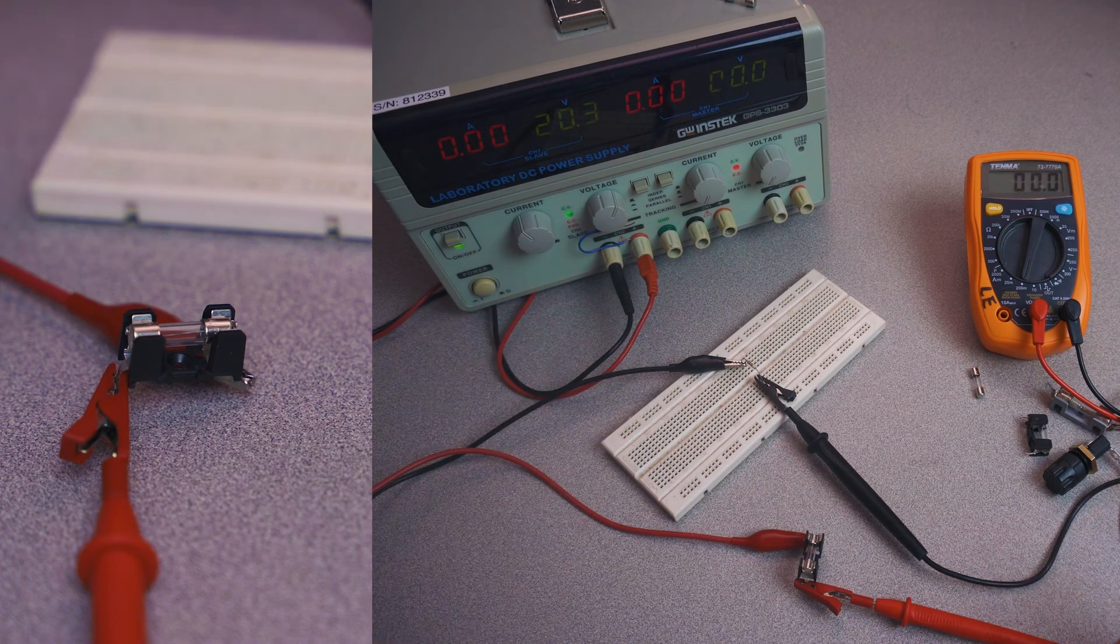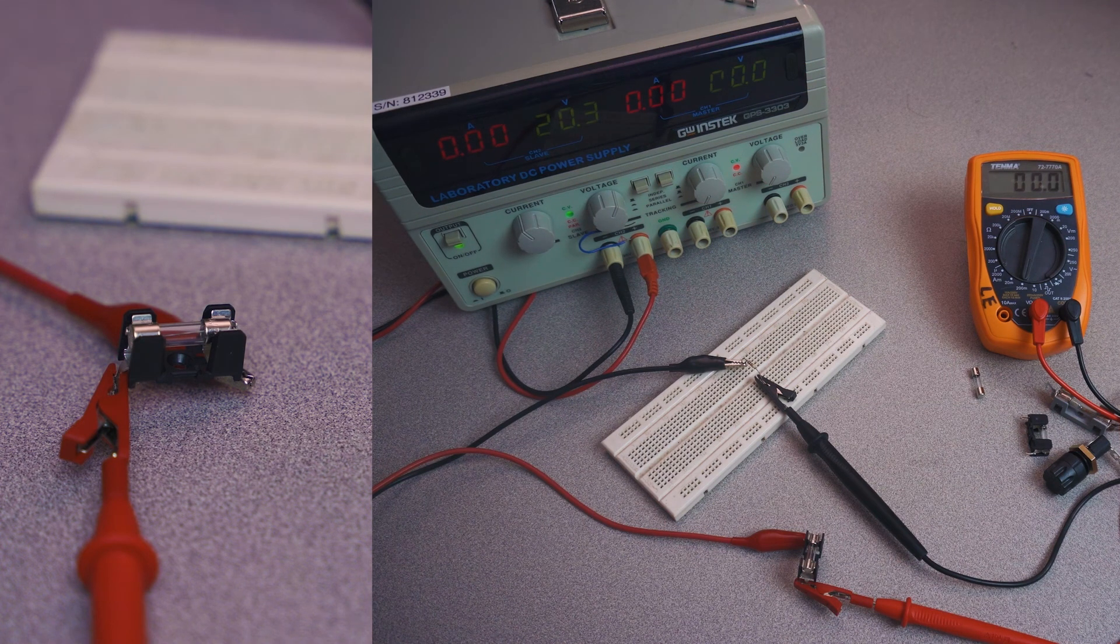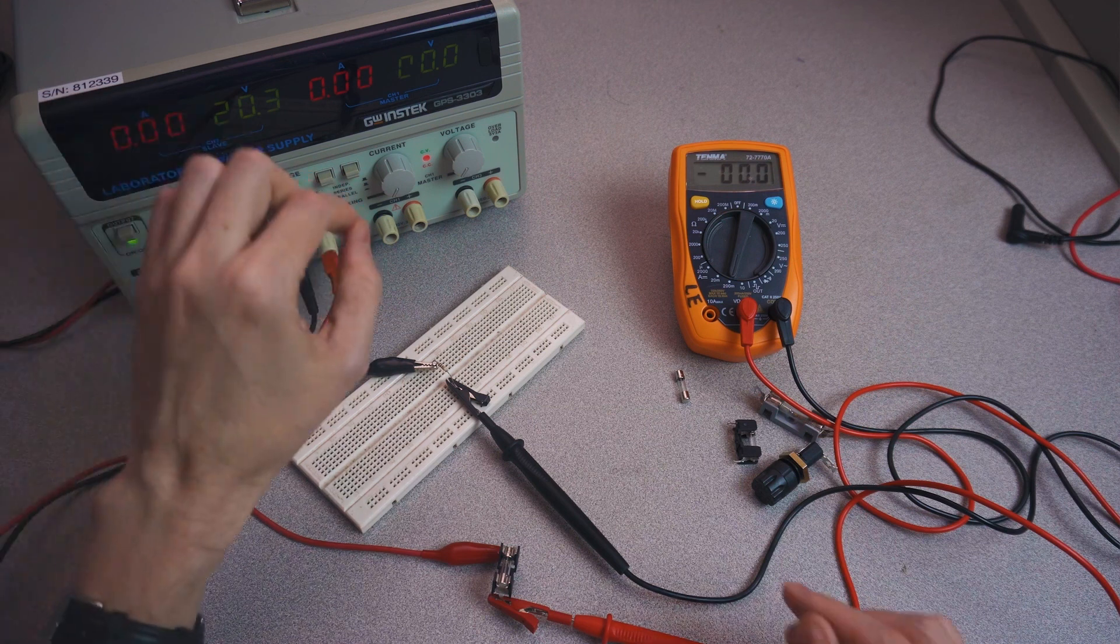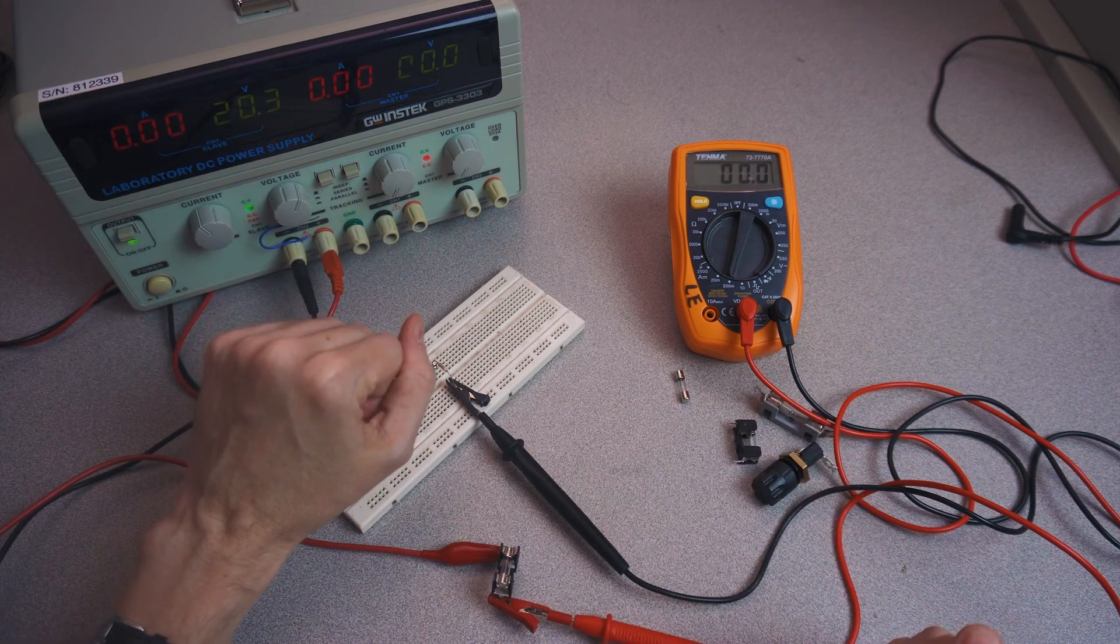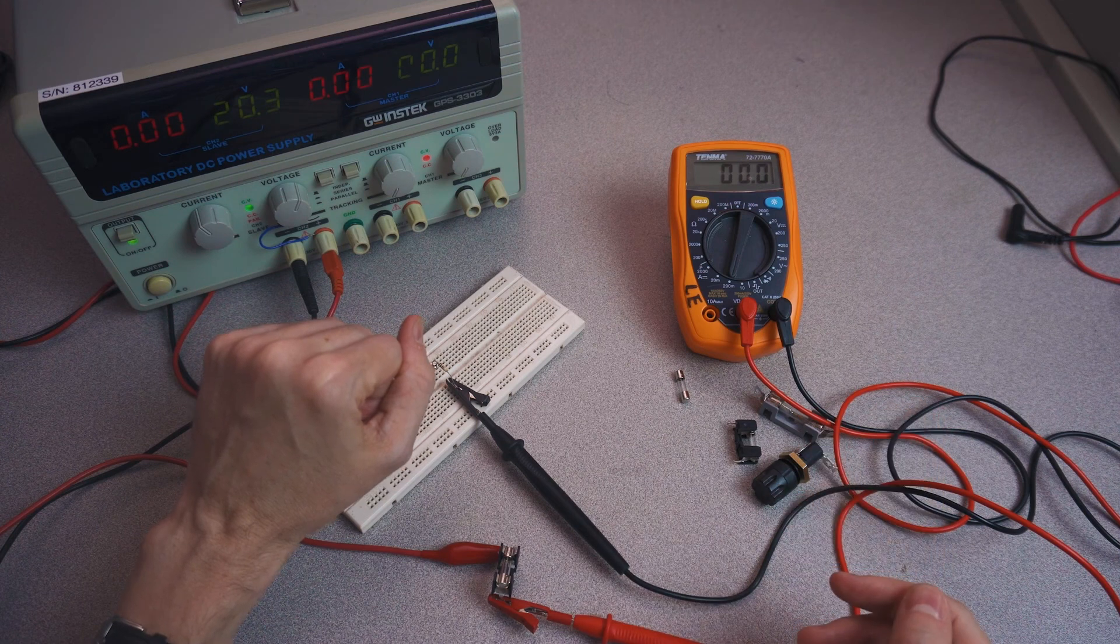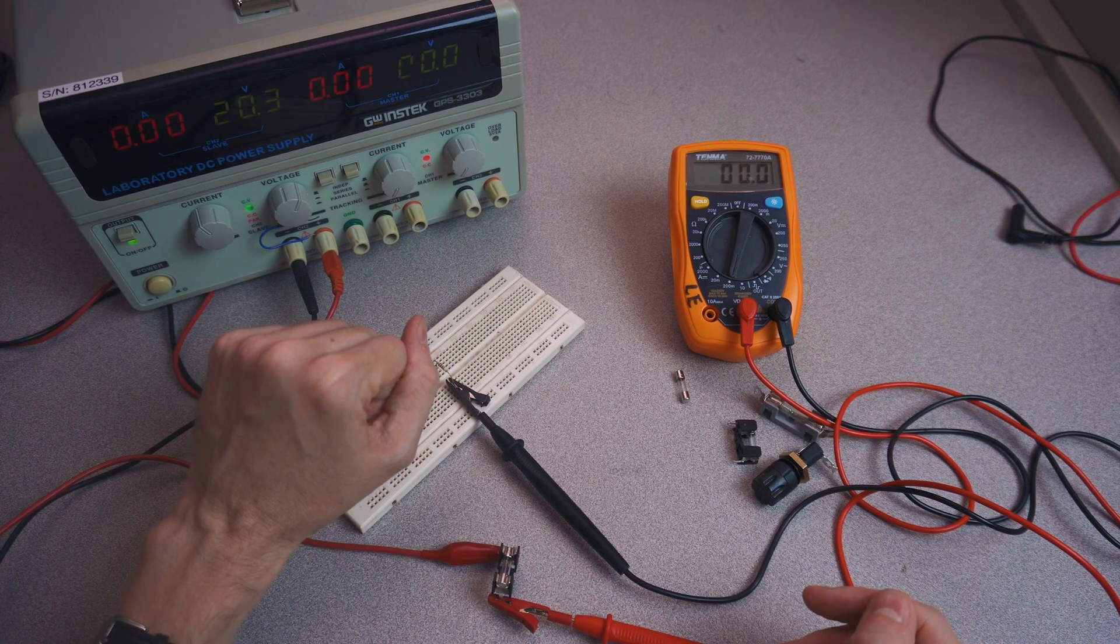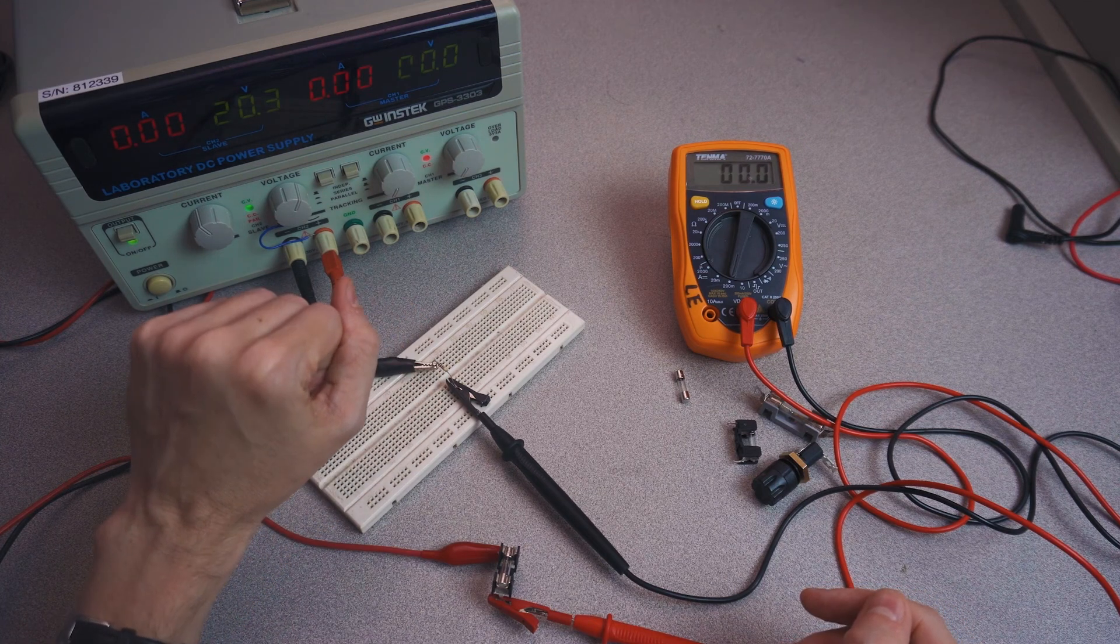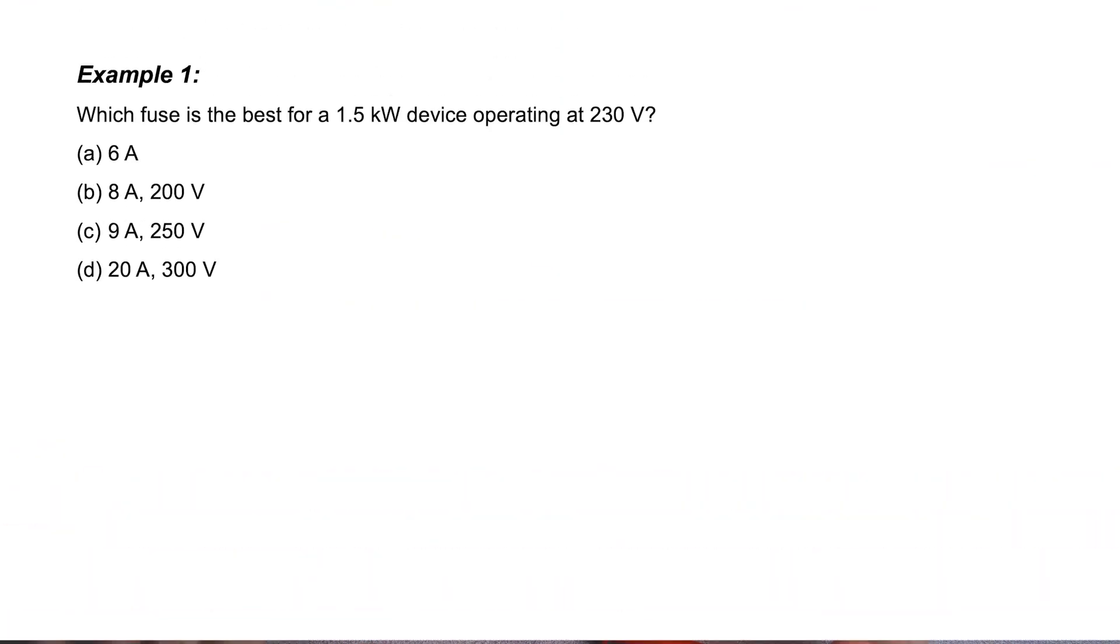It looks like the fuse just blew out. We can see that now there isn't any current going through this fuse. So I think this was a very clear demonstration of the difference between these two fuses. Although they were both rated at 35 milliamps, we saw that the slow blow fuse took quite a bit longer than the fast-acting fuse to blow out. Let's go and look at a couple of example problems on fuse selection before we wrap up the video.